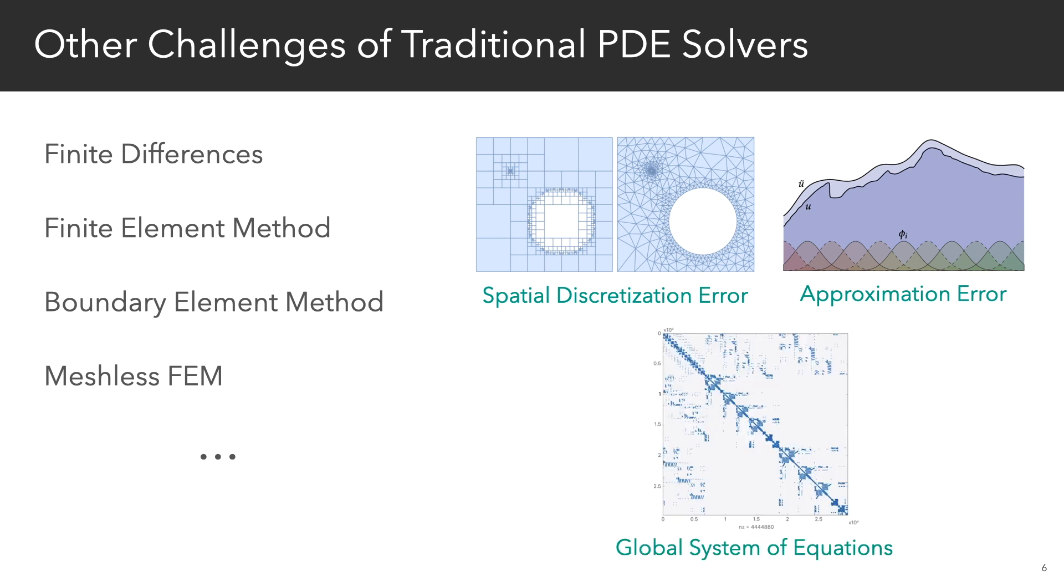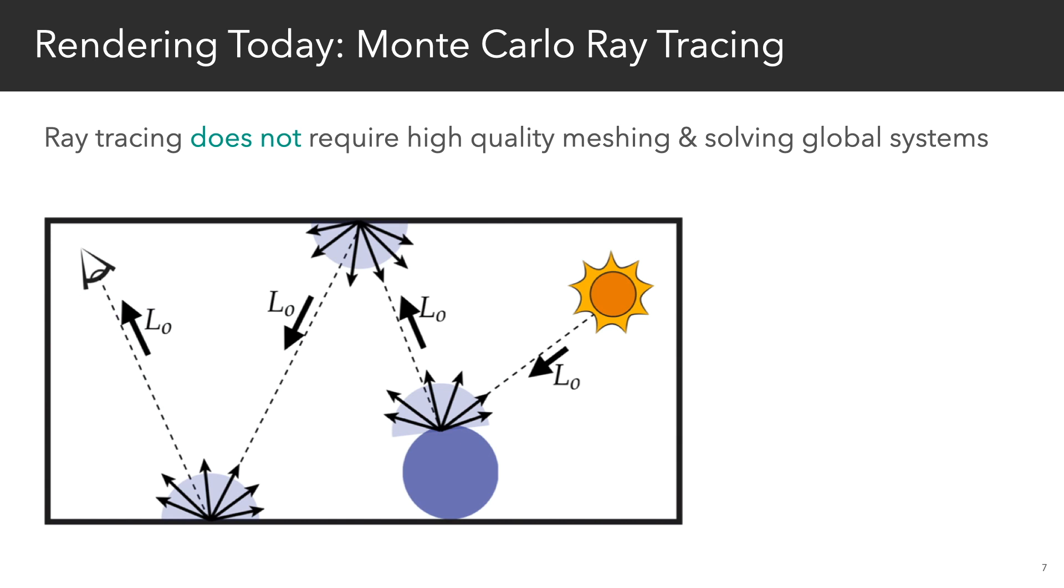And you also need to solve large global systems of equations, even if you're only interested in seeing the solution in a specific region. And so for all of these reasons, in rendering people said, maybe there's another way. Maybe Monte Carlo methods can help us overcome a lot of these challenges.